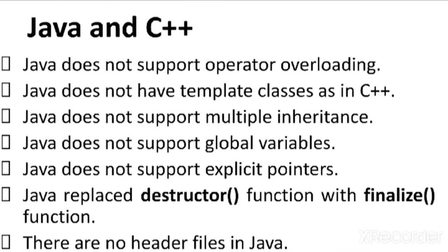Now we will study the difference between Java and C++. Java does not support operator overloading. For example, we normally use the plus operator to perform addition of two numbers. Suppose if we use the same plus operator to combine two strings together, then that plus operator is called overloaded. This feature was supported in C++, but in Java it is not supported.